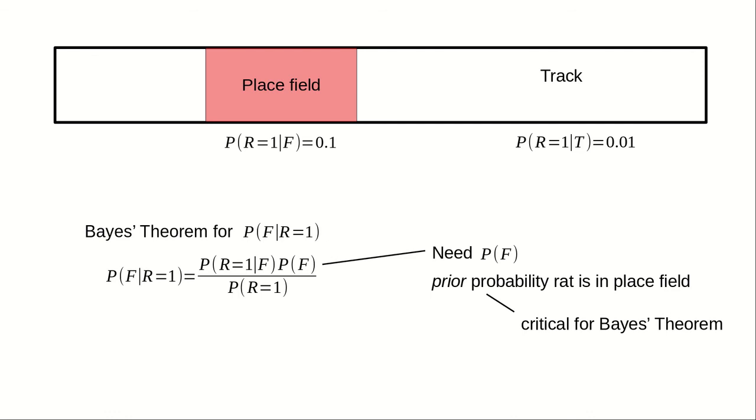Bayes' theorem also contains the probability P of R equals 1 that the neuron fires a spike in any given time window. We don't need additional data though. If we have the prior probability P of F, along with the probabilities of spiking conditioned on being inside or outside the place field, we can calculate the spiking probability P of R equals 1.